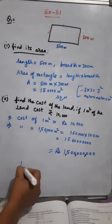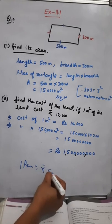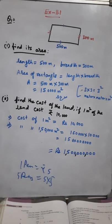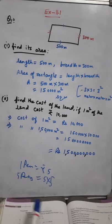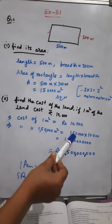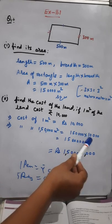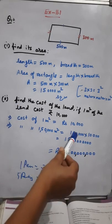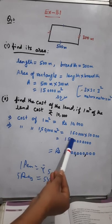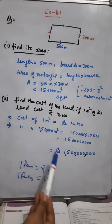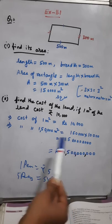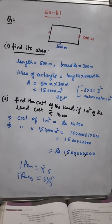One meter square ka cost 10,000 rupees hai, to one lakh 50,000 meter square ka cost kya hoga? One lakh 50,000 into 10,000. When we multiply, we get one billion five hundred million. So the cost of one lakh 50,000 meter square area will be rupees one billion five hundred million.